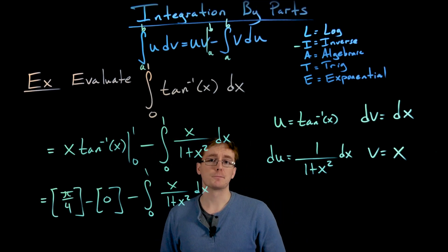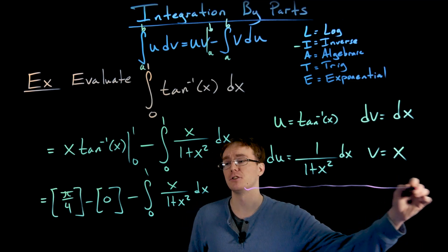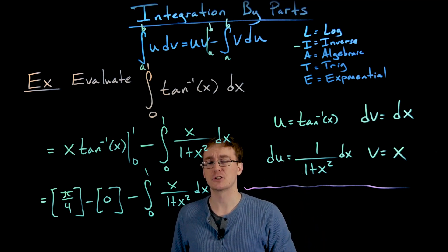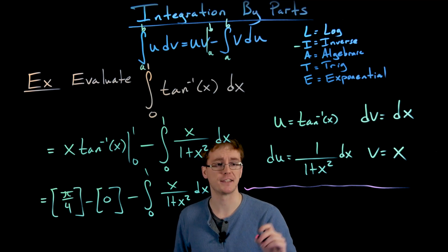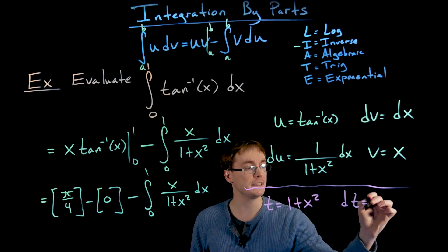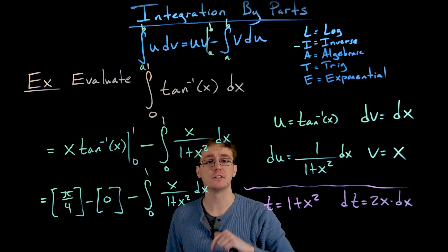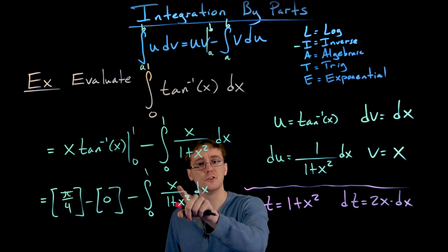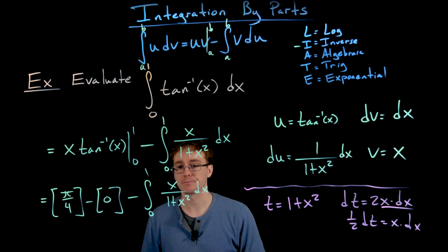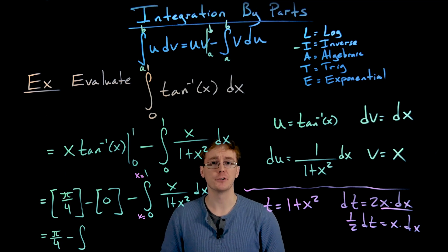This remaining integral isn't one we can identify by inspection, so we'll use a substitution. To avoid confusion with our earlier use of u in integration by parts, let's call it a t-substitution. Let t equal 1 plus x squared, so dt equals 2x dx, meaning x dx equals one-half dt. We rewrite the integral in terms of t.